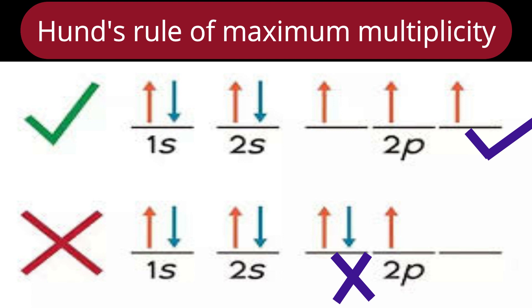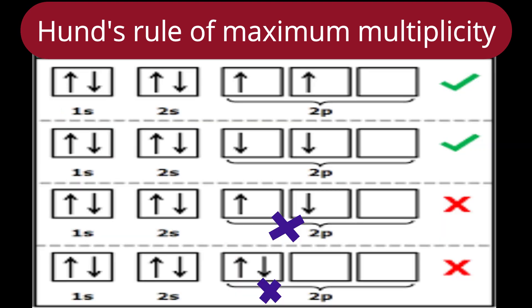Let us elaborate on the carbon example from different angles. The first possible arrangement has both electrons unpaired with spin plus half. The second possibility has both electrons unpaired but each with spin minus half. The third possibility has one electron with spin plus half and the other with spin minus half — both are unpaired but in different orbitals. The fourth possibility has both electrons paired in one orbital.